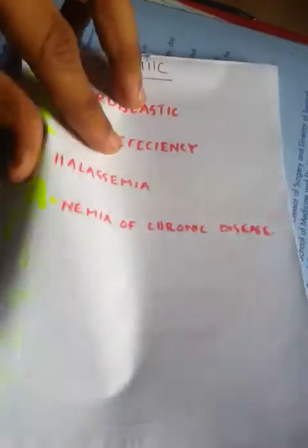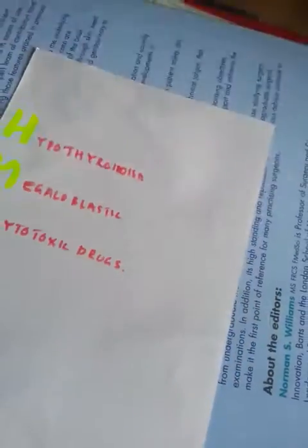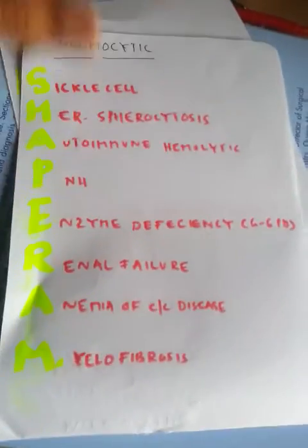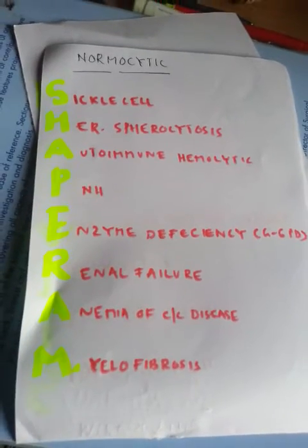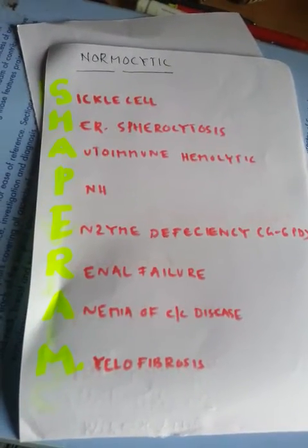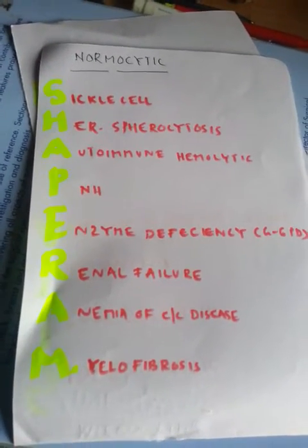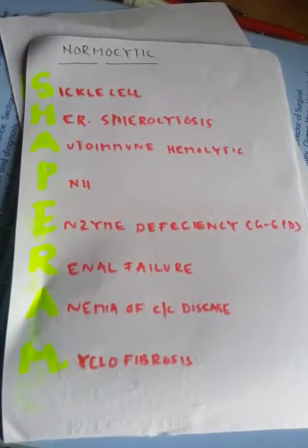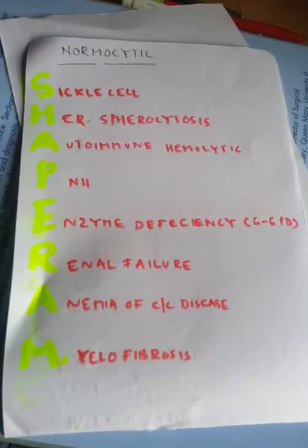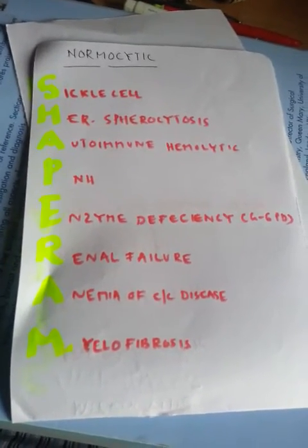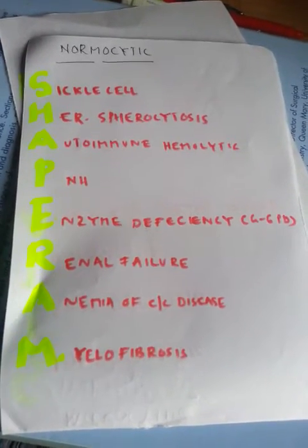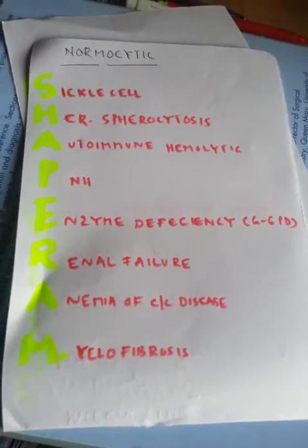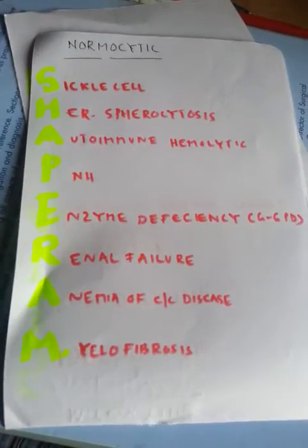Moving on to normocytic anemias, the mnemonic is SHAPE RAM. Expanding it: S is for Sickle cell, H is for Hereditary spherocytosis, A is for Autoimmune hemolytic anemia, P is for PNH, E is for Enzyme deficiencies (mainly G6PD), R is for Renal failure, A is for Anemia of chronic disease, M is for Myelofibrosis.